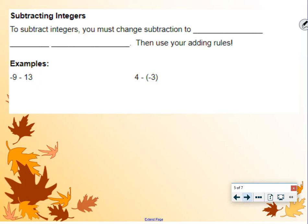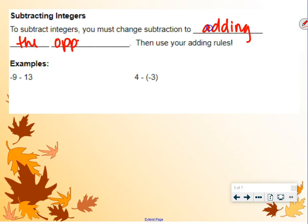This is subtracting integers. To subtract integers, you must change the subtraction to adding the opposite. And then once we have an addition problem, you use your adding rules. So, examples of this.